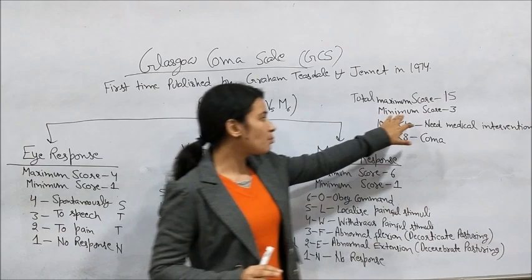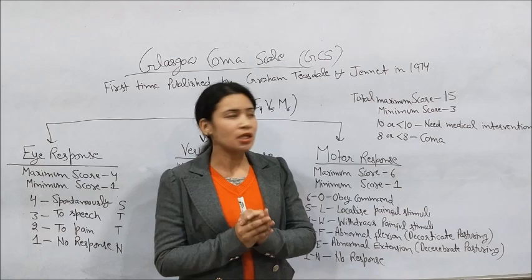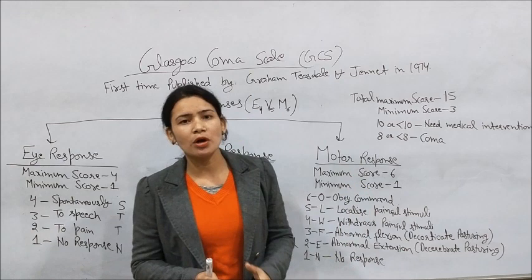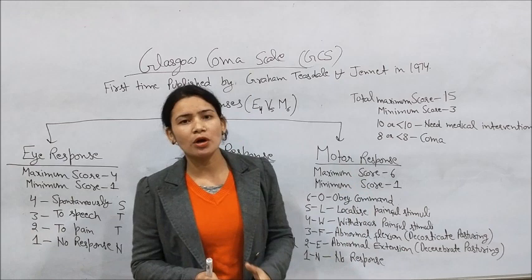The total maximum score on the Glasgow Coma Scale is fifteen and the minimum score is three. If the score is ten or less than ten, we need to provide medical intervention. If the score is less than eight, the patient is considered to be in a coma. Thank you so much — if you liked this video, please like and share it.